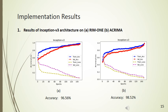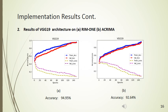In the second architecture, VGG-19, the RIM1 dataset obtained accuracy of 94.95% and the ACRIMA dataset obtained accuracy of 92.64%. The VGG-19 model performs well on both training and testing data, so we cannot see any overfitting issues in those graphs.